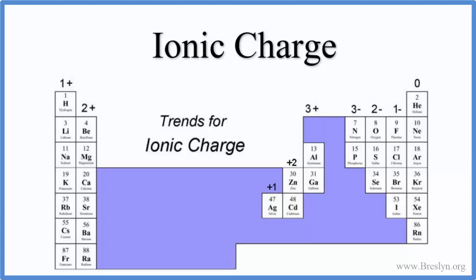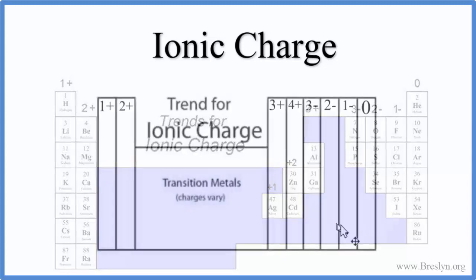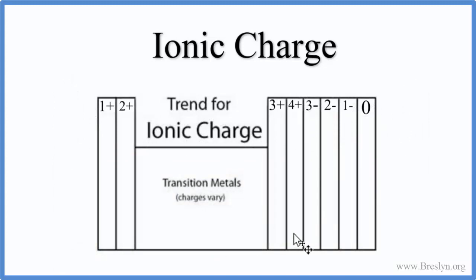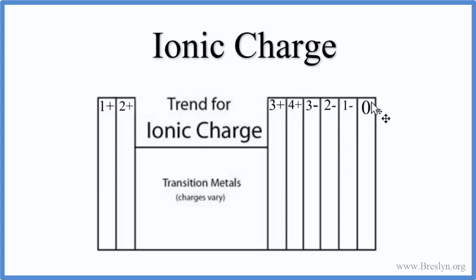Let's look at ions of single elements first, then we'll look at polyatomic ions. We can use this simple periodic table to remember charge. Group 1 is 1+, group 2 is 2+. As we go across, we go up to 4+, then start going down: 3-, 2-, 1-. The noble gases are neutral, so they have zero charge. This general version works for most chemistry, but it's a little bit of an oversimplification.